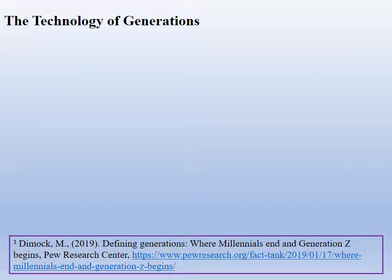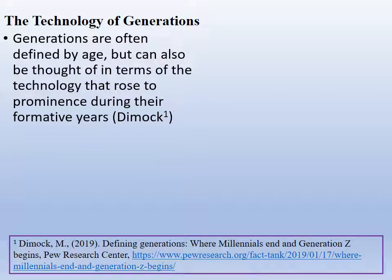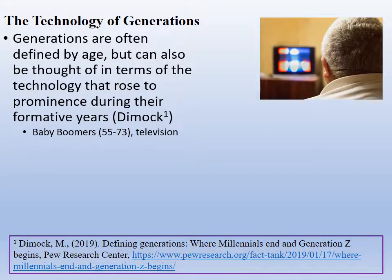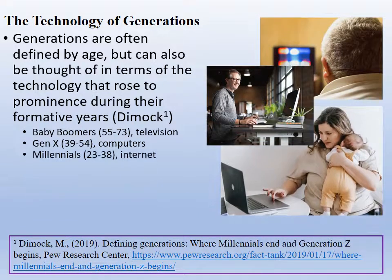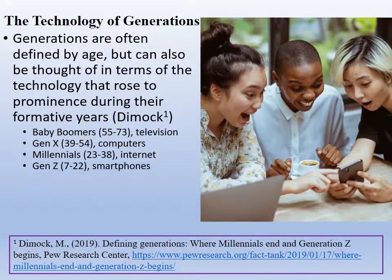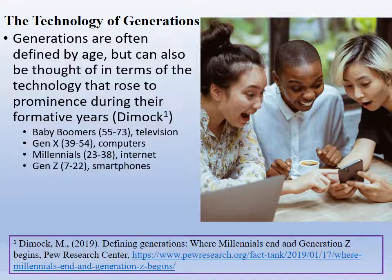So why this especially high smartphone ownership rate among college students? Although generations are often defined by age, they are also strongly linked with the expansion of technology and the particular technology that rose to prominence during their formative years. These generation-technology connections include baby boomers ages 53 to 73 and television, Generation X ages 39 to 54 and personal computers, millennials ages 23 to 38 and the internet, and Generation Z ages 7 to 22, whose adults include most incoming college first-year students who have never lived a moment of their adult lives without a smartphone in their pocket. The adults of Generation Z are a video and mobile-centered generation, and they view their mobile devices as the remote controls of their lives.